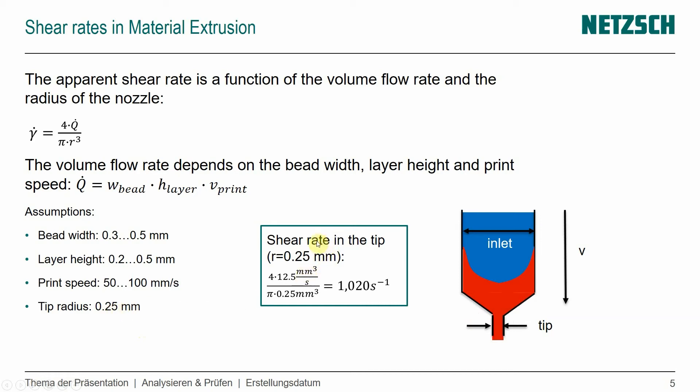And so if you want to calculate the shear rate in the tip, and we're using some of these assumptions here, we can see that at an extreme setup, we can reach just a little north of 1,000 reciprocal seconds. And that is already the upper limit that we see in the filament extrusion, typically, or extrusion of pipes.